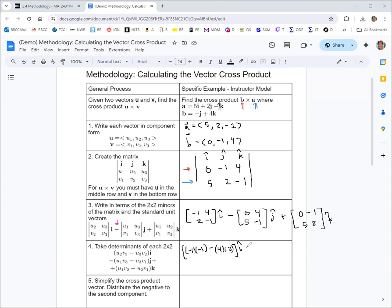That would be negative one times negative one for the main diagonal minus four times two for the anti-diagonal. Then you do the same thing for the other ones. This would be zero times negative one minus four times five, and zero times two minus negative five.